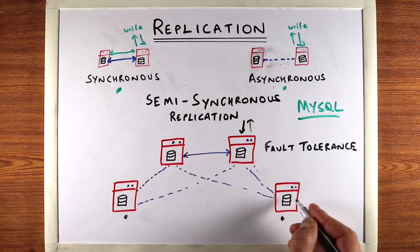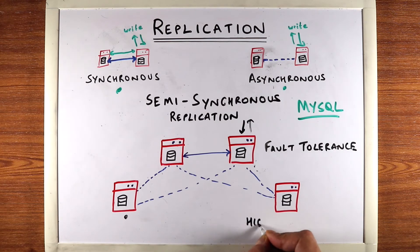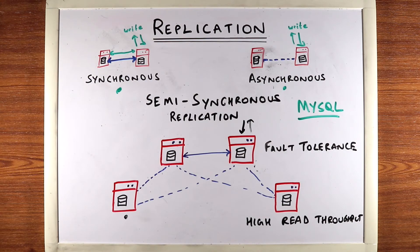You can actually perform reads from these two machines as well, so that really helps you get high read throughput. This kind of topology makes sense if your read load is very high—if your reads are much greater than your writes.